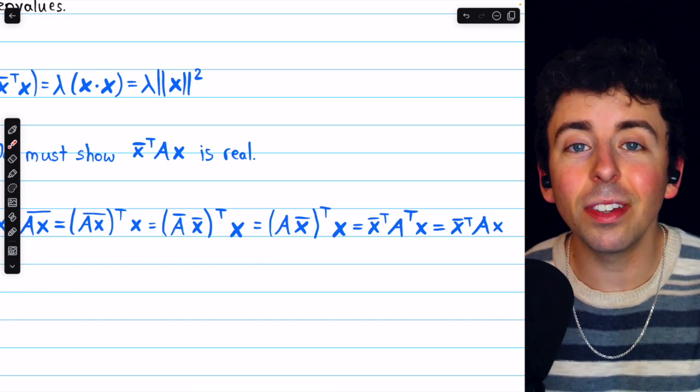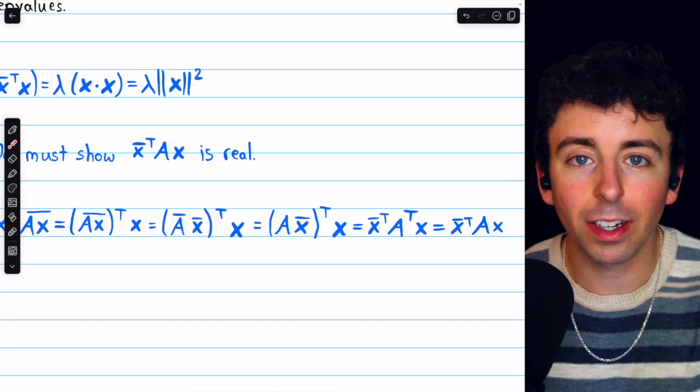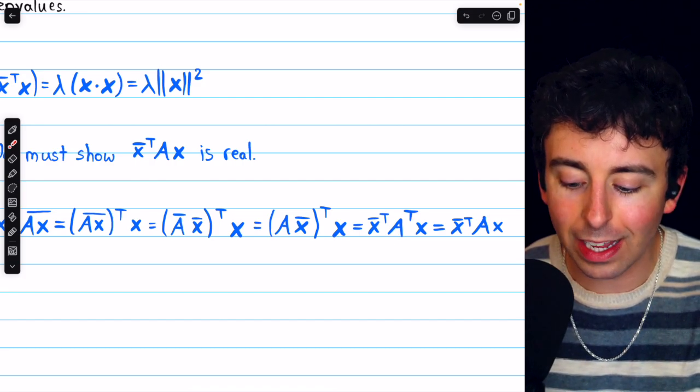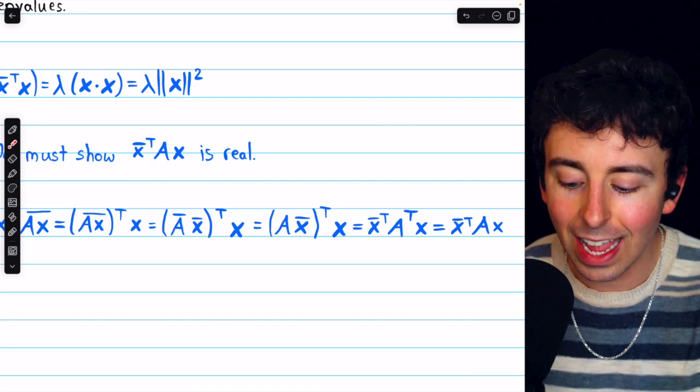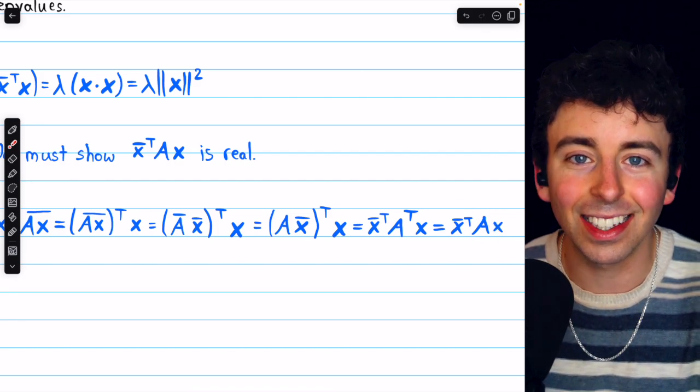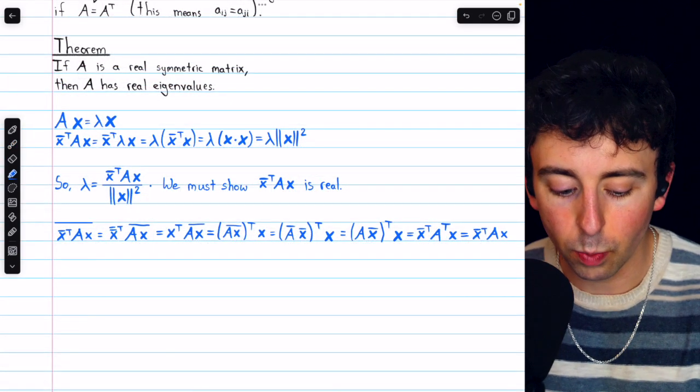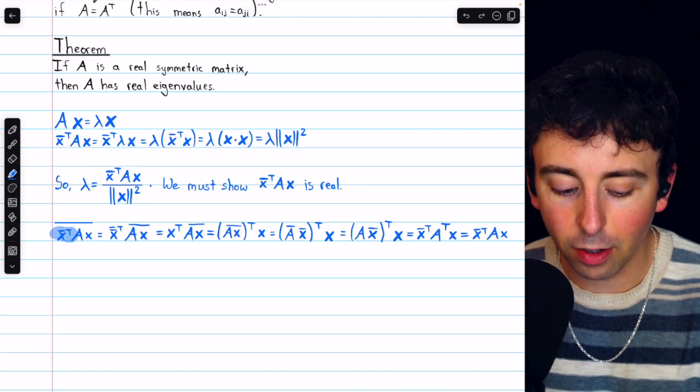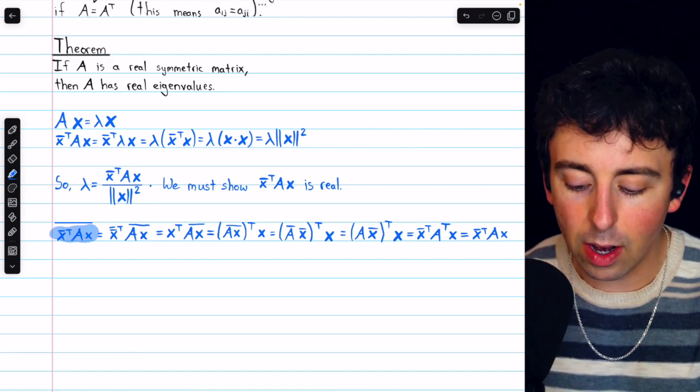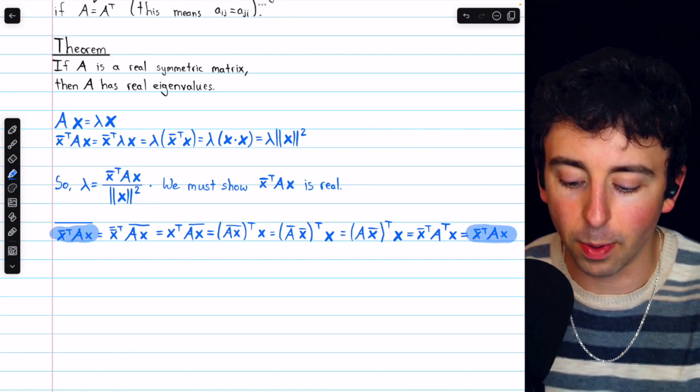And then the last step, A was taken to be a symmetric matrix. So by definition, A transpose is the same as A. And so this is where we end up, which is exactly where we started. In total, we took the conjugate of x conjugate transpose Ax, and we ended up with x conjugate transpose Ax.